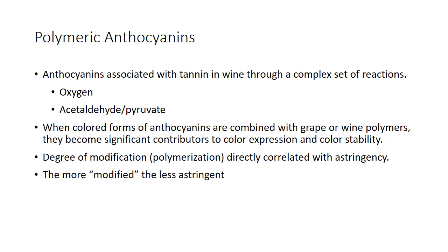Moving on to Polymeric Anthocyanins. There are lots of sources of aldehyde — yeast make it, you can get it through mocks, you can actually legally add it in the juice phase, or you can buy aldehyde and pour it in your wine, though I don't recommend it. We also see those aldehydes in barrels — those aromatic aldehydes just getting sucked into the wine. When colored forms of anthocyanins are combined with grape or wine polymers, they are significant contributors to color expression and color stability. Once anthocyanins are polymerized and stuck together, they become a little less colorful but the color is very stable.